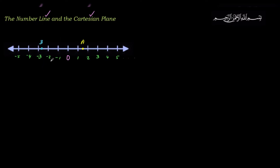You can write labels either above or below the number line — you can improvise. So if this point is negative 2.6, that is point B, and let's say this is point C. To illustrate: let's call negative 4 point A, this point here point B, and this particular point C. So A is at negative 4, B is at negative 1, and C is at positive 5.